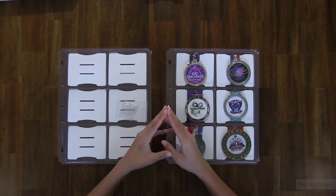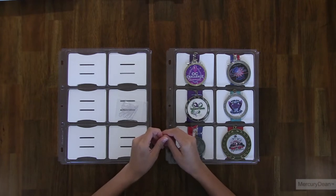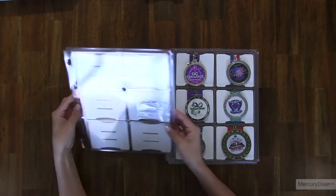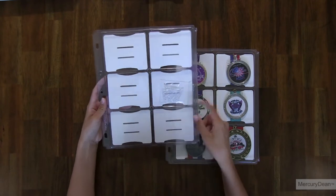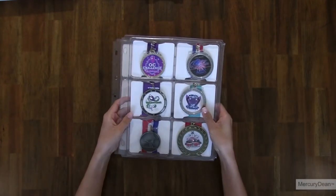Thank you for your interest in Mercury Dean's award medal binder pages. I will demonstrate how to wrap one medal. It will be the same for your other medals. A new page looks like this with six cardboard cavity inserts and plastic clips. A finished page looks like this.